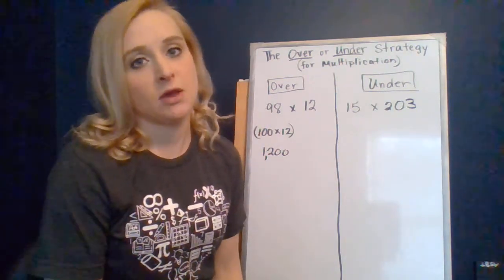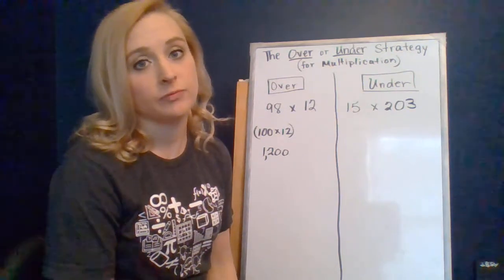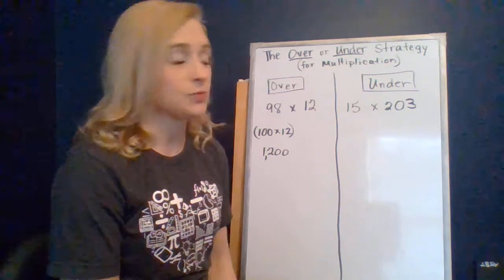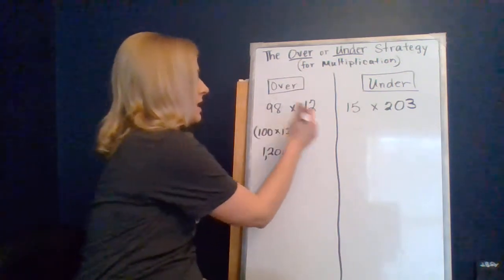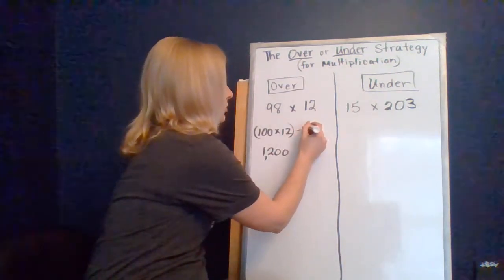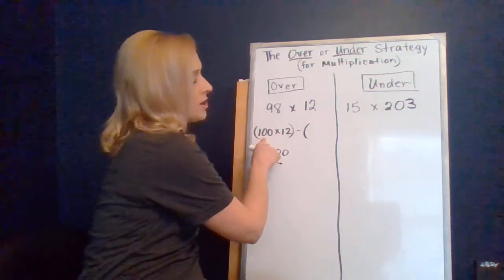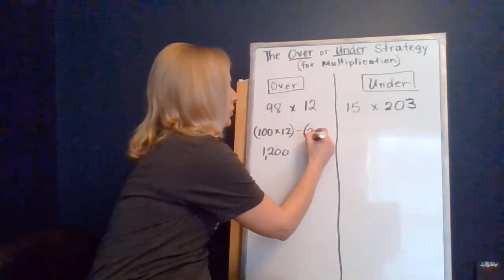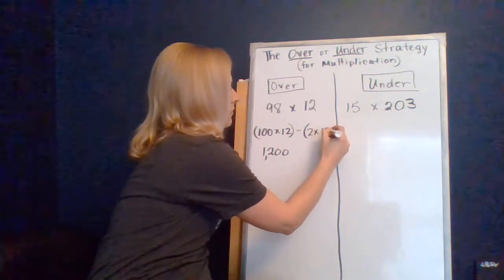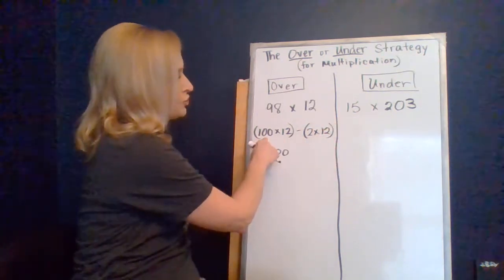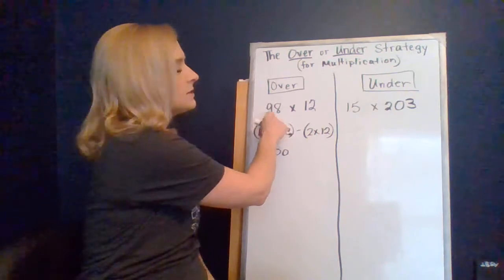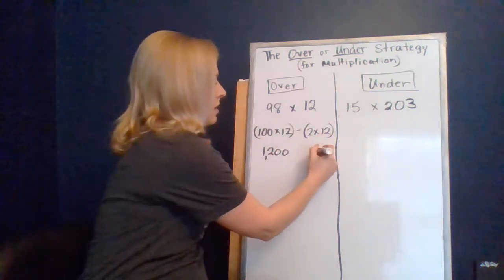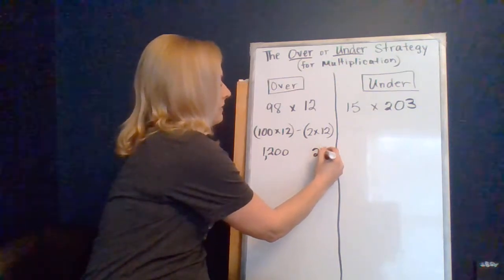So how many groups of egg cartons do we need to remove? We need to remove two egg cartons, right, so that we only have the 98. So the expression will look something like this: we have 100 groups of 12 and then we're going to subtract two groups of 12, because 100 minus the 2 is the 98 that we really did start with in the problem. So what's two groups of 12? That's 24.